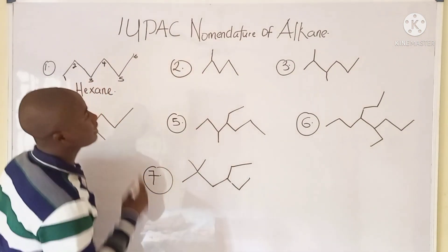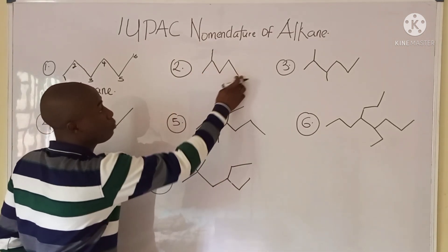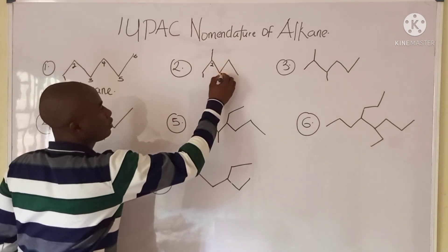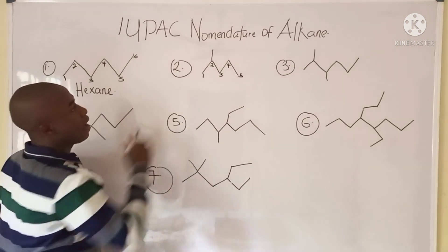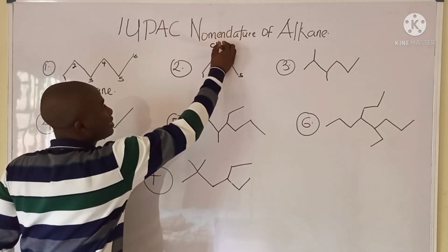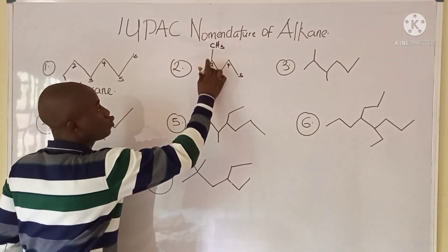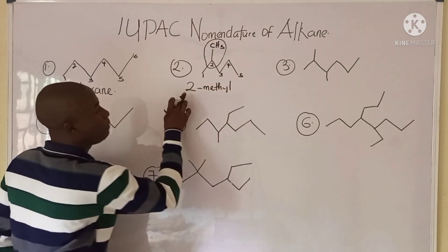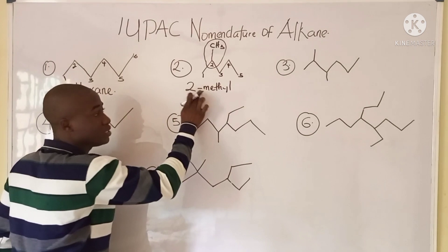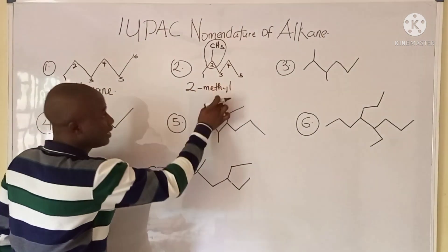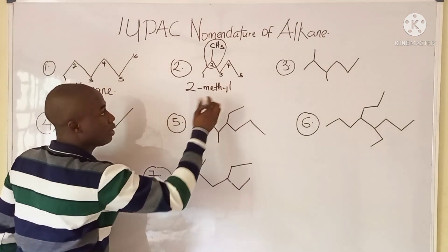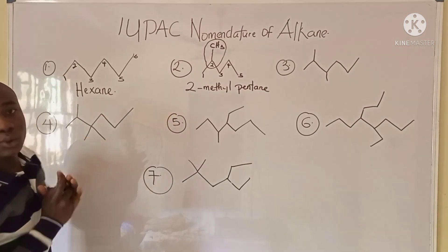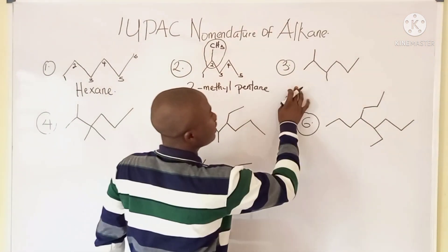The second example has a substituent. We number from this end because numbering from the other end gives a higher value for the substituent. So we have one, two, three, four, five. This group signifies a methyl group. At carbon two there's a methyl group, so the name includes 'two-methyl.' The parent chain has five carbons, which is pentane. So the name of this compound is 2-methylpentane.